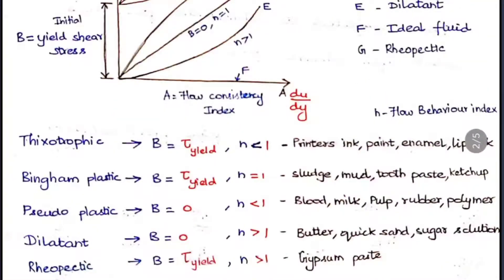For thixotropic fluids, b equals some yield shear stress (tau_e on the y-axis) and n < 1. Examples of thixotropic fluids include printer's ink, paint, enamel, and lipstick. For Bingham plastic, b equals the yield value and n = 1; examples are sludge, mud, toothpaste, ketchup, and sewage.